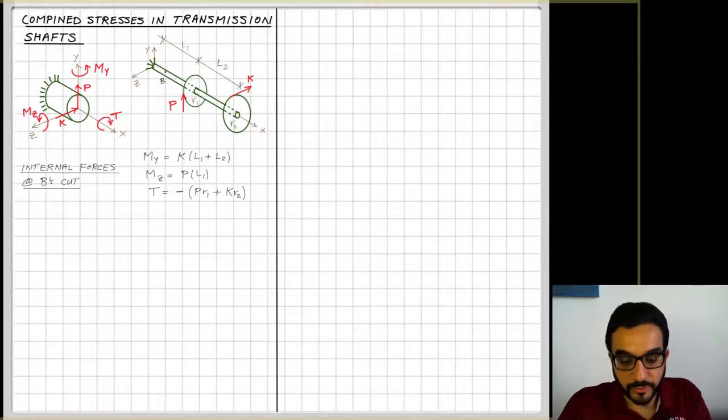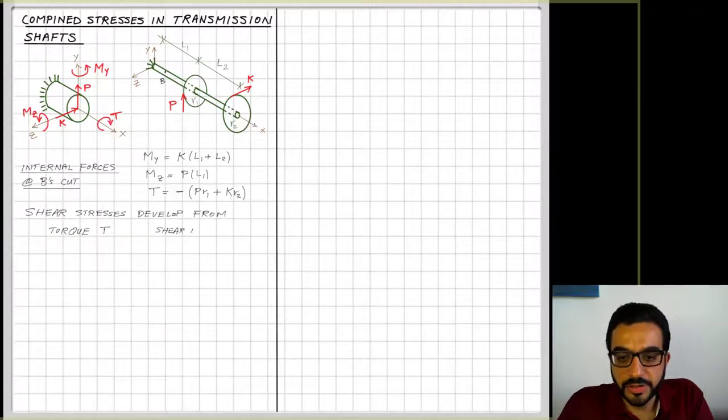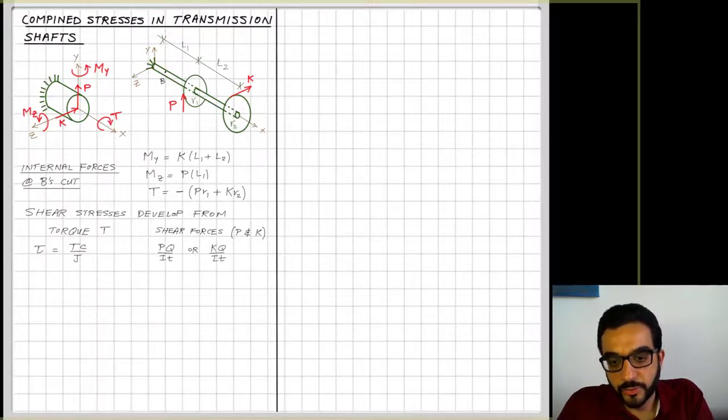What we'll do is figure out the shear stresses developed from the torque T and also from the shear forces that we have. So from the torque, Tc over J is the formula we're going to use, or from the shear forces it's PQ over IT.